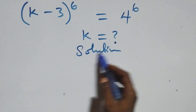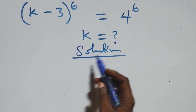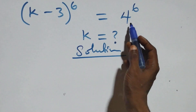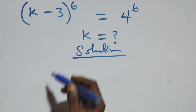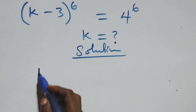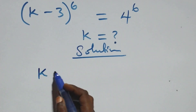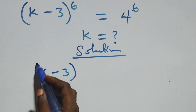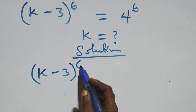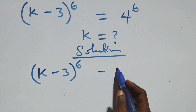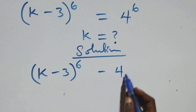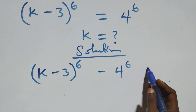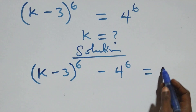From what we have here, we take 4 raised to power 6 to the left-hand side. Then what we have becomes: (k minus 3) all raised to power 6, minus 4 raised to power 6, equals zero.